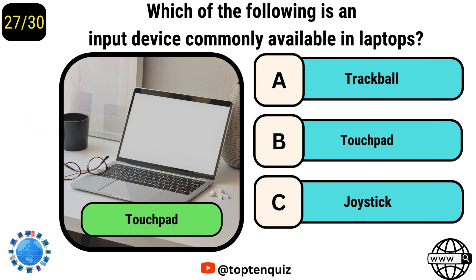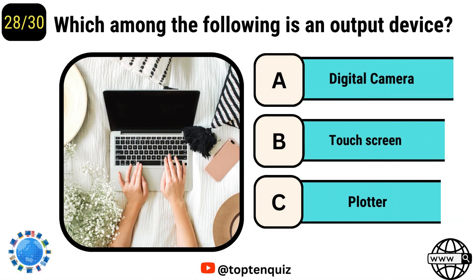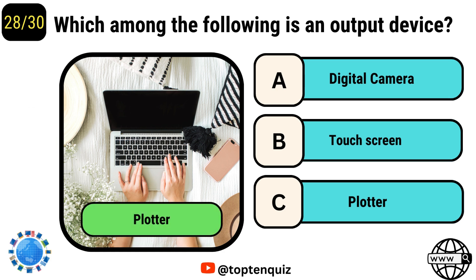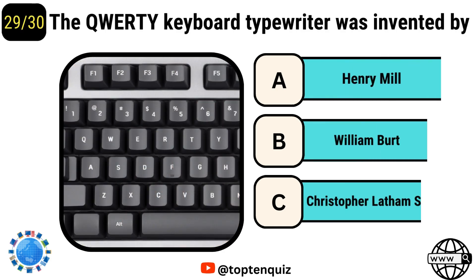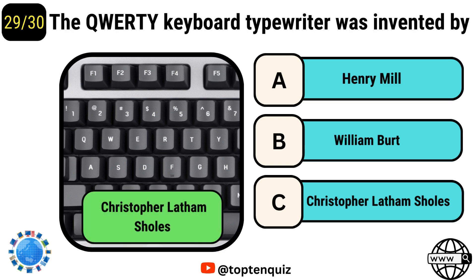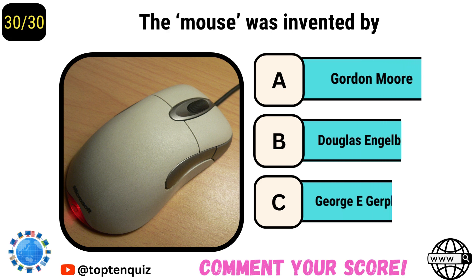Which of the following is an input device commonly available in laptops? Touchpad. Which among the following is an output device? Plotter. The CRT keyboard typewriter was invented by Christopher Schultz. The mouse was invented by Douglas Engelbart.